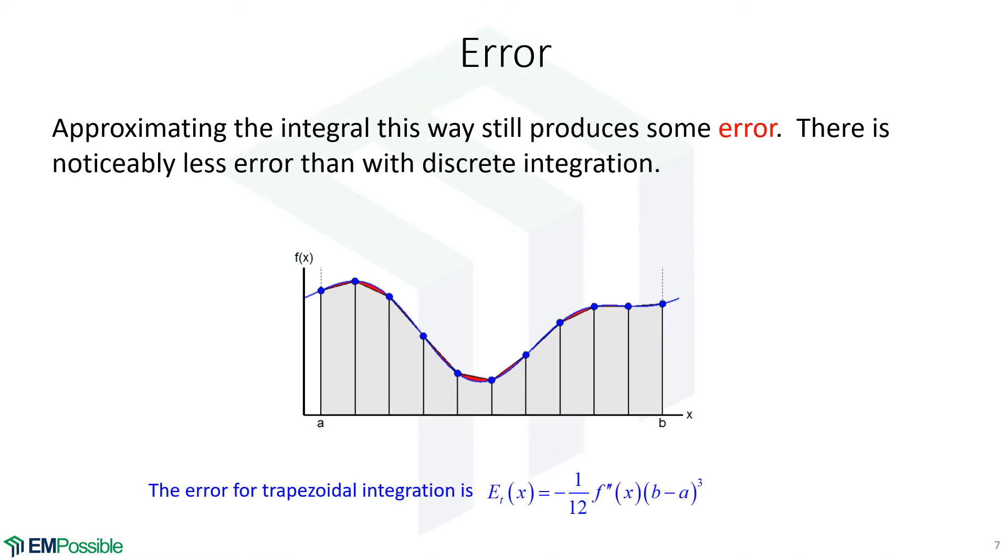And if we highlight the error regions, we're clearly seeing less error than we saw for discrete integration. Only little tiny slivers of error where our trapezoid isn't conforming exactly to the curve. And this, of course, happens when the curve is highly nonlinear. The more linear that curve is, the less error there would be, obviously.